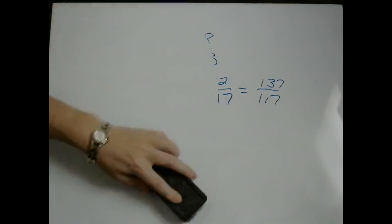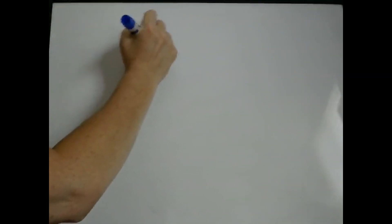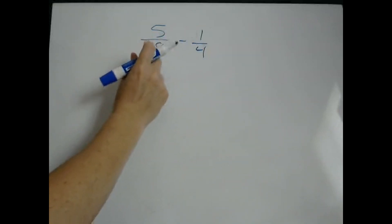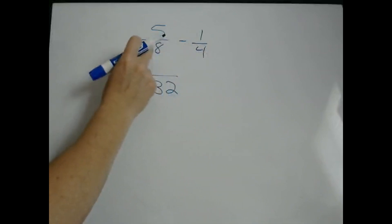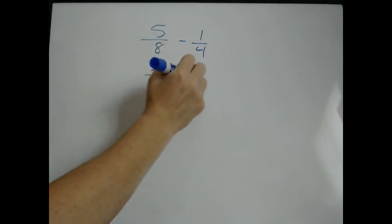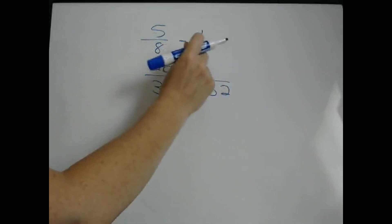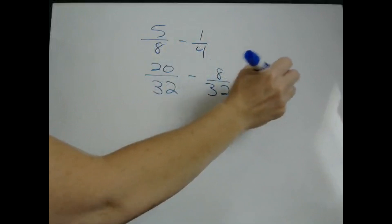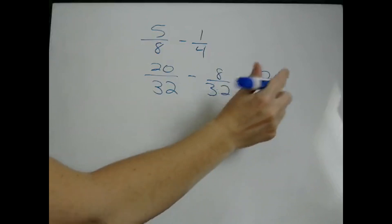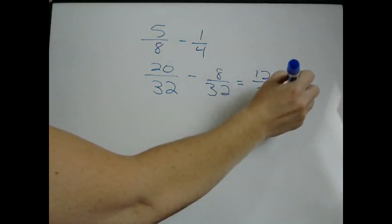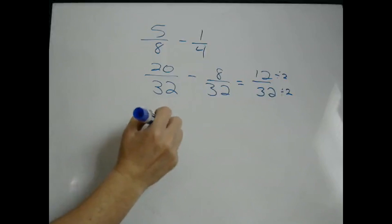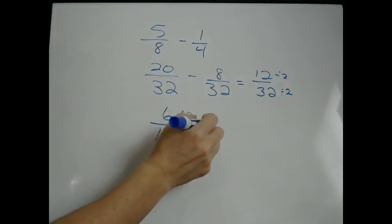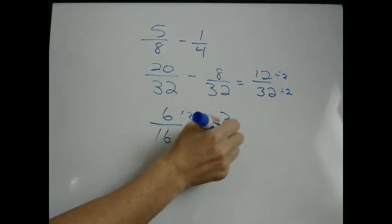Subtraction works the same way — you just change the addition sign to a subtraction sign. So if we have 5 eighths minus 1 fourth, find a common denominator by multiplying: 8 times 4 is 32. We multiplied 8 by 4, so we multiply 5 times 4 to get 20. We multiplied 4 by 8, so we multiply 1 times 8 to get 8. That gives us 12 thirty-seconds. This is not in lowest terms: divide by 2 to get 6 sixteenths, still not lowest terms; divide by 2 again to get 3 eighths.